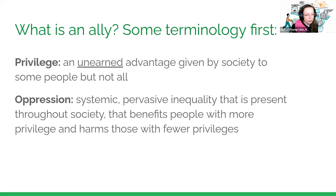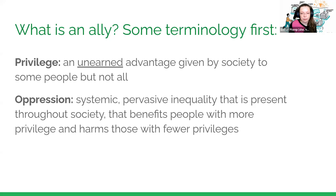The example of oppression would be that I can build my CV quite easily and I actually benefit from that. But when people are disabled, this harms them because they cannot spend the same amount of time on CV building. So this whole system is basically built for me but not for others, and that is oppression — it's a systemic system.